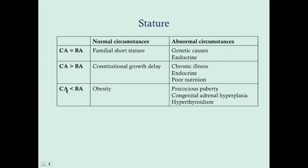On the flip end, if the chronologic age is less than the bone age, this can be due to obesity — which can accelerate closure of the epiphyseal growth plates — as well as precocious puberty, congenital adrenal hyperplasia, and hyperthyroidism.